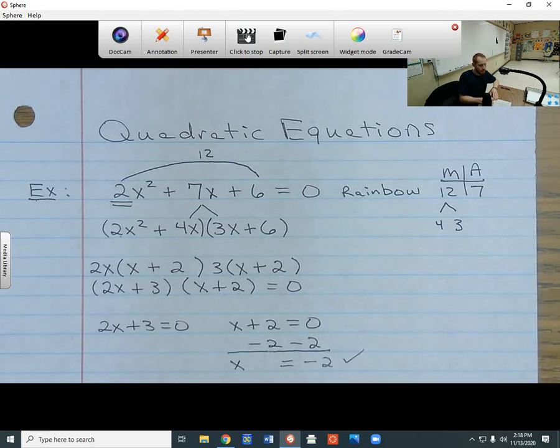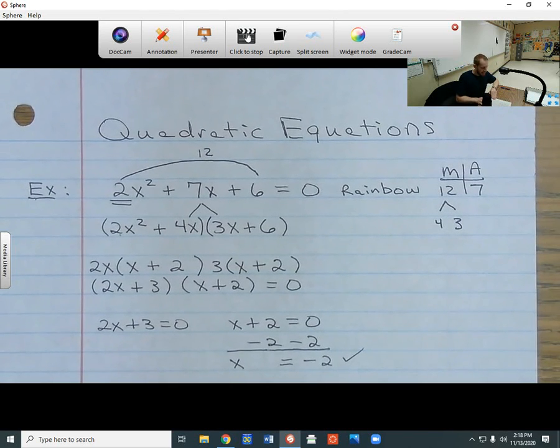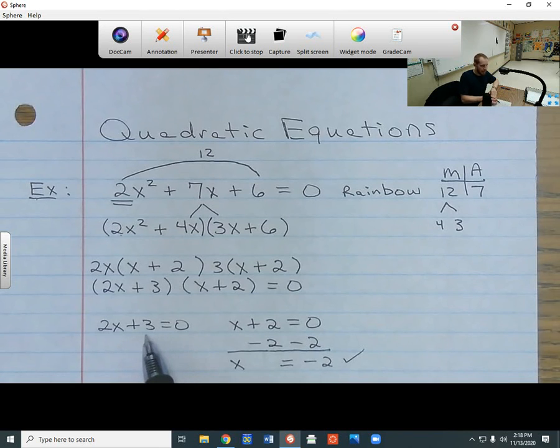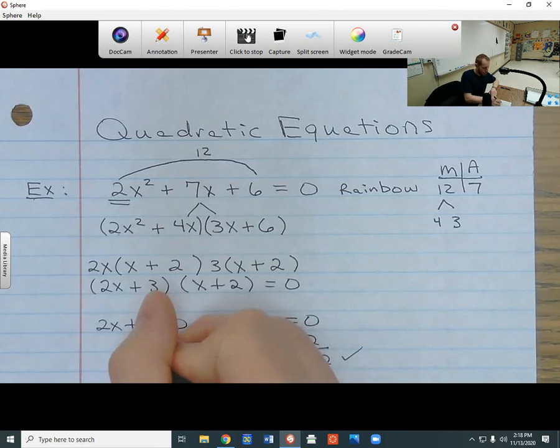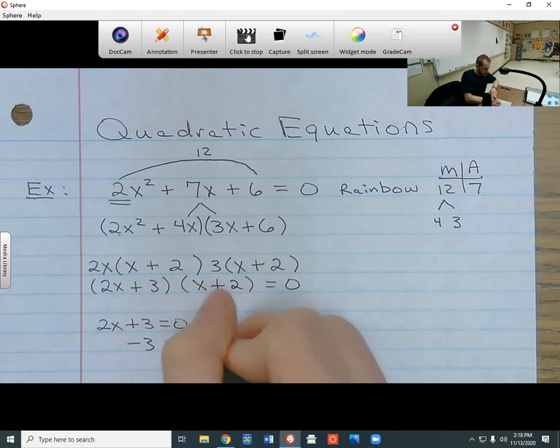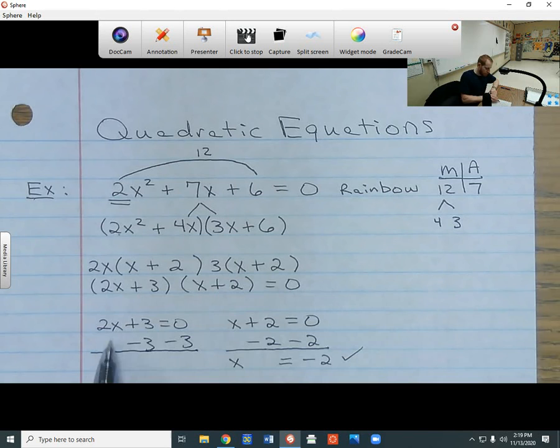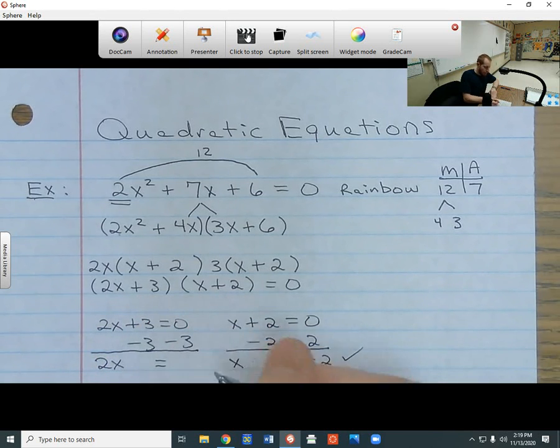Now, over here, this is a two-step equation. I need to get rid of the plus 3. And then after I get rid of the plus 3, I'm going to get rid of the 2 that's beside this x. So to get rid of the plus 3, I subtract 3 from both sides and I see what I have left. The 2x is going to come down, and then 0 minus 3 is going to give me negative 3.